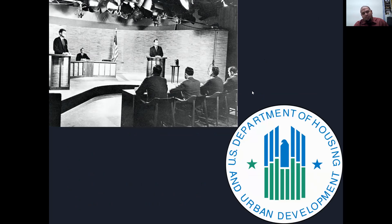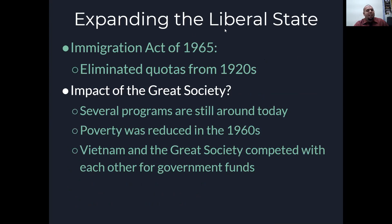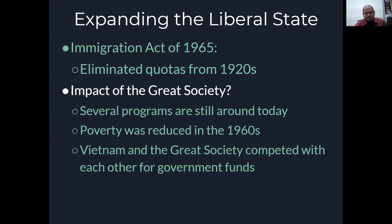We have the Immigration Act of 1965, which eliminated those quotas from the 1920s under the Quota Act of 1921. Several Great Society programs are still around today, much like the New Deal. Poverty was reduced during the 1960s, but the war in Vietnam and the Great Society would compete with each other to get government funds — a tug of war between the war abroad and these programs at home.